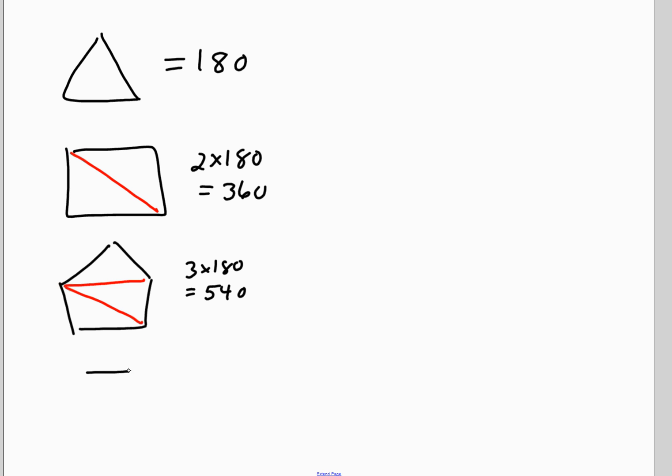If we do a hexagon, the minimum number of triangles you can form is 4, and 4 times 180 is 720. Basically, the formula, the n minus 2 part, is actually the number of triangles, the minimum number of triangles you can form. Each triangle adds up to 180 degrees. That's where that came from.